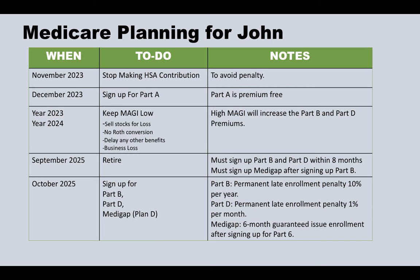To summarize the Medicare plan for John's situation: in November 2023 — before the Initial Enrollment Period — he should stop making contributions to his HSA to avoid any penalty. Then in December 2023, his birth month, he should sign up for Part A. Part A is premium-free, and December is his birth month when he turns 65, which falls within the seven-month Initial Enrollment Period window.